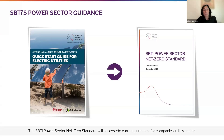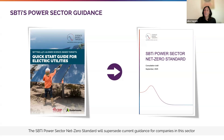At that point, companies will need to assess whether their targets still meet the latest SBTI criteria and update them if necessary. We do, however, encourage companies to align with the power sector standard earlier where possible. And while the power standard is under development, companies should continue to use the Quick Start Guide for Electric Utilities to set science-based targets.